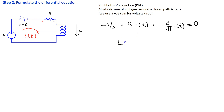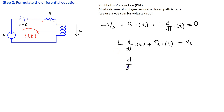Rearranging, we get L d/dt of I(T) plus R·I(T) equals Vs. Dividing both sides by L, we get d/dt of I(T) plus (R/L)·I(T) equals Vs/L.